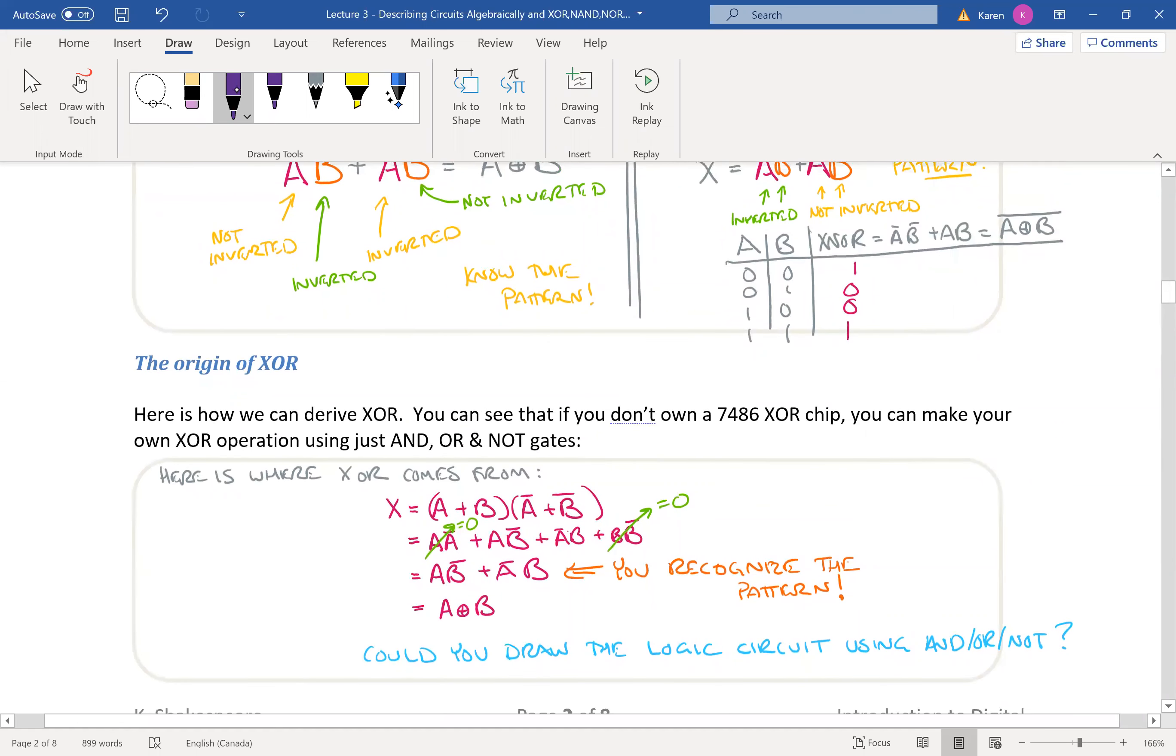Now you can also buy a chip and the chip performs the function A exclusive OR B. And if you